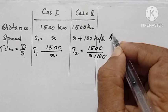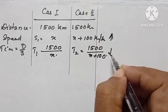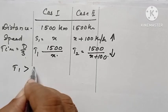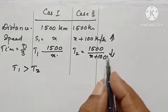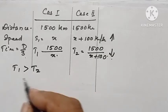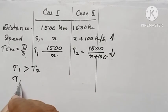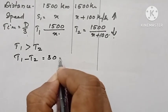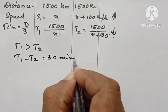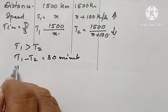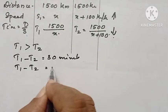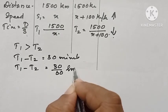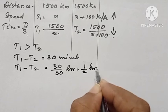When speed is increased, time will be reduced. Therefore, definitely the first case time is greater, t1 is greater than t2. In the question, it is given that the difference between the time is 30 minutes. Therefore, t1 minus t2 equal to 30 minutes. We can convert it into hours: 30 divided by 60 hours equal to 1 by 2 hours.